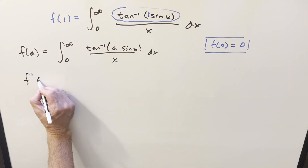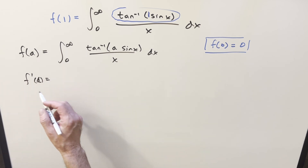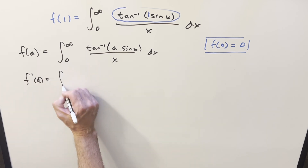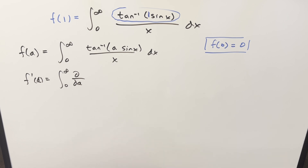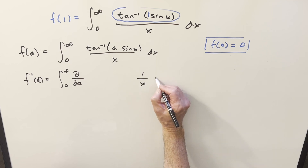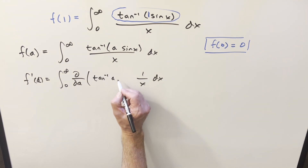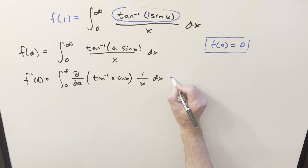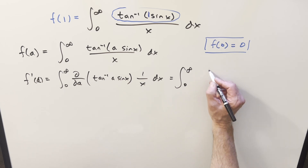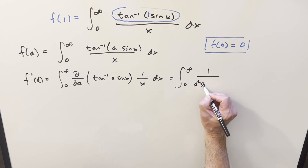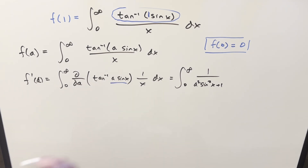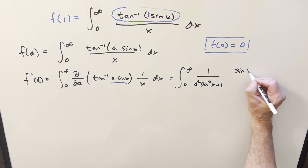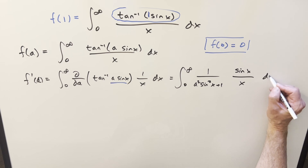Let's go ahead and differentiate with respect to a using Feynman's trick — we're going to differentiate inside the integral sign as a partial. One over x is going to be a constant, so we bring it out, and then we just differentiate the arctan(a·sine x) piece. For the derivative, we do the normal thing with arctan: we get one over a²·sin²x plus one, and then by chain rule with respect to a, sine x is just a constant, so sine x pops out. Then we have this over x, dx.